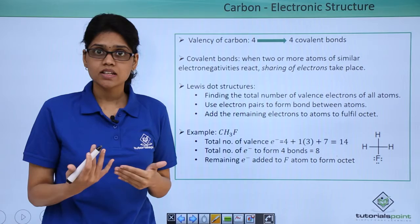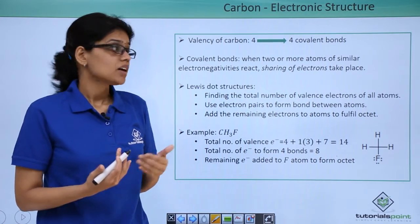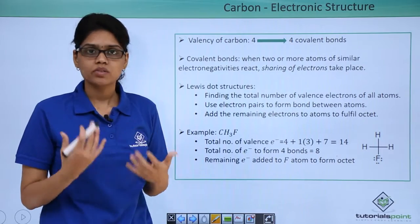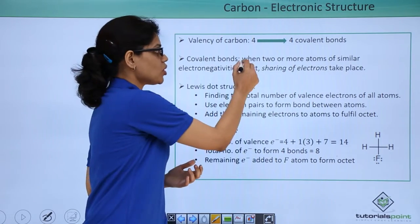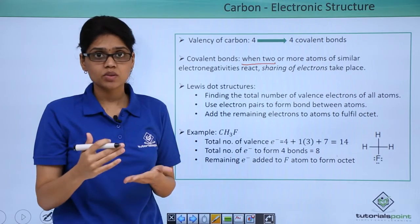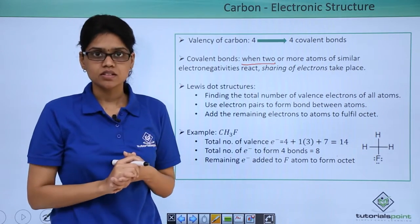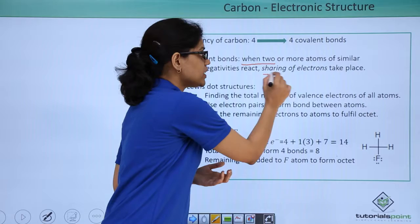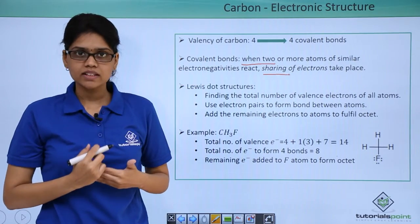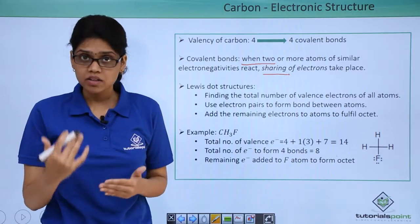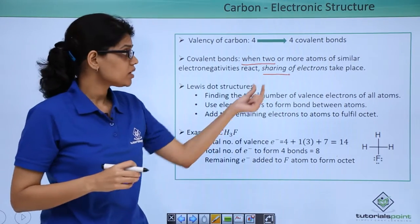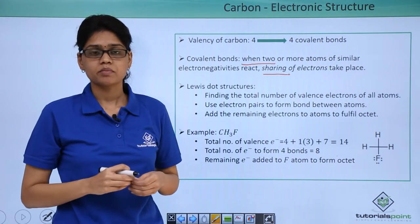So what sort of bonding does carbon get involved in? Carbon forms covalent bonds. Covalent bonds are formed when two or more atoms of similar electronegativity react with each other such that sharing of electrons takes place. The other commonly known bonding is ionic bonding, where transfer of electrons takes place. In covalent bonds, sharing of electrons takes place.